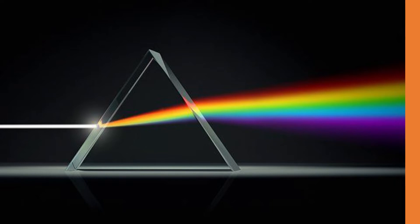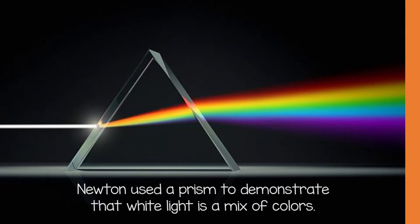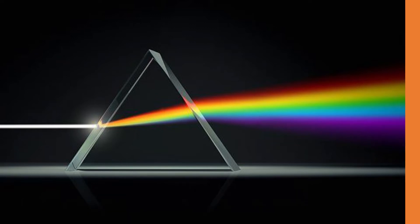Our eyes don't see these colors individually. Newton used a prism to demonstrate that white light is a mix of colors. When sunlight passes through a prism, it bends — this is called refraction. The angle of bending is different for the various colors of light: red, orange, yellow, green, blue, indigo, and purple.